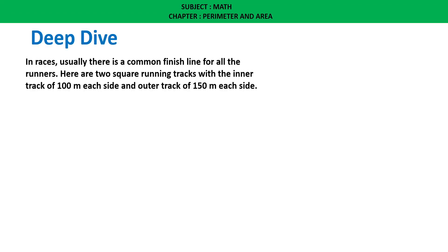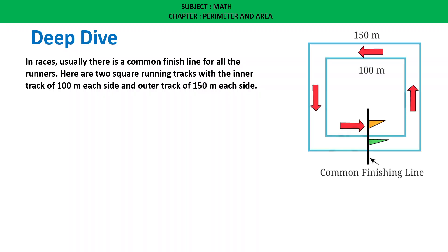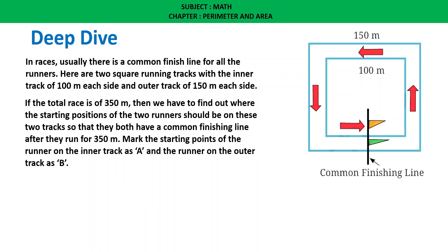Deep Dive: In races, usually there is a common finish line for all the runners. Here are two square running tracks — the inner track with 100 meters each side and the outer track with 150 meters each side. If the total race is 350 meters, we have to find out where the starting positions of the two runners should be on these two tracks.